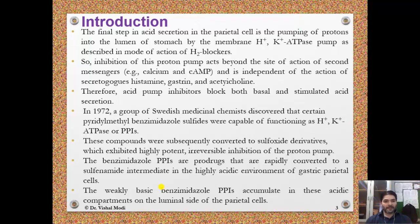Introduction. The final step in acid secretion in the parietal cell is the pumping of protons into the lumen of the stomach by the membrane H+/K+ ATPase pump, as described in the mode of action of H2 blockers. Inhibition of this proton pump acts beyond the site of action of second messengers like calcium and cyclic AMP, and is independent of the action of secretagogues — histamine, gastrin, and acetylcholine.